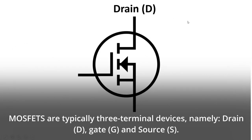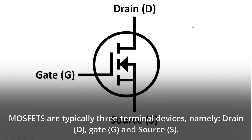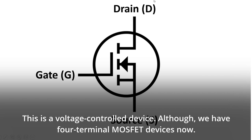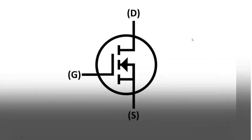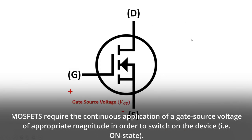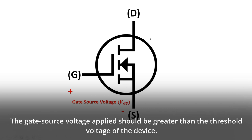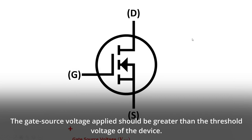MOSFETs are typically three terminal devices, namely drain (D), gate (G), and source (S). This is a voltage controlled device, although we have four terminal MOSFET devices now. MOSFETs require the continuous application of a gate source voltage of appropriate magnitude in order to switch on the device, i.e. on state. The gate source voltage applied should be greater than the threshold voltage of the device.